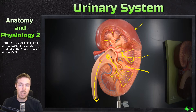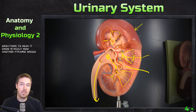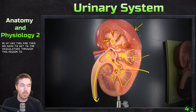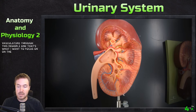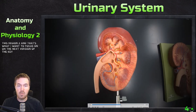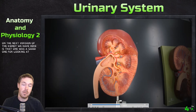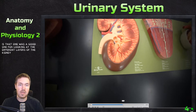Between the pyramids we have the renal columns, which are the separations between the pyramid-shaped structures. Keep in mind this is a cross-section, so another pyramid would be oriented above. We also need vasculature to pass through this region, which is the focus of the next kidney model.